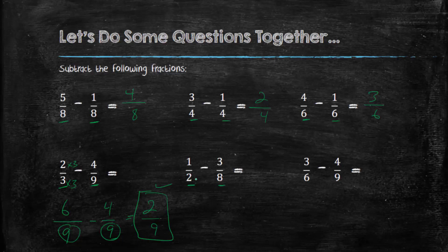Again, denominators, not the same. We could make them the same by getting an equivalent fraction of 1 over 2. And we do that by multiplying both by 4. So now we have, this becomes 4 over 8. And now we could subtract. 4 minus 3 is 1. So the answer is 1 over 8.